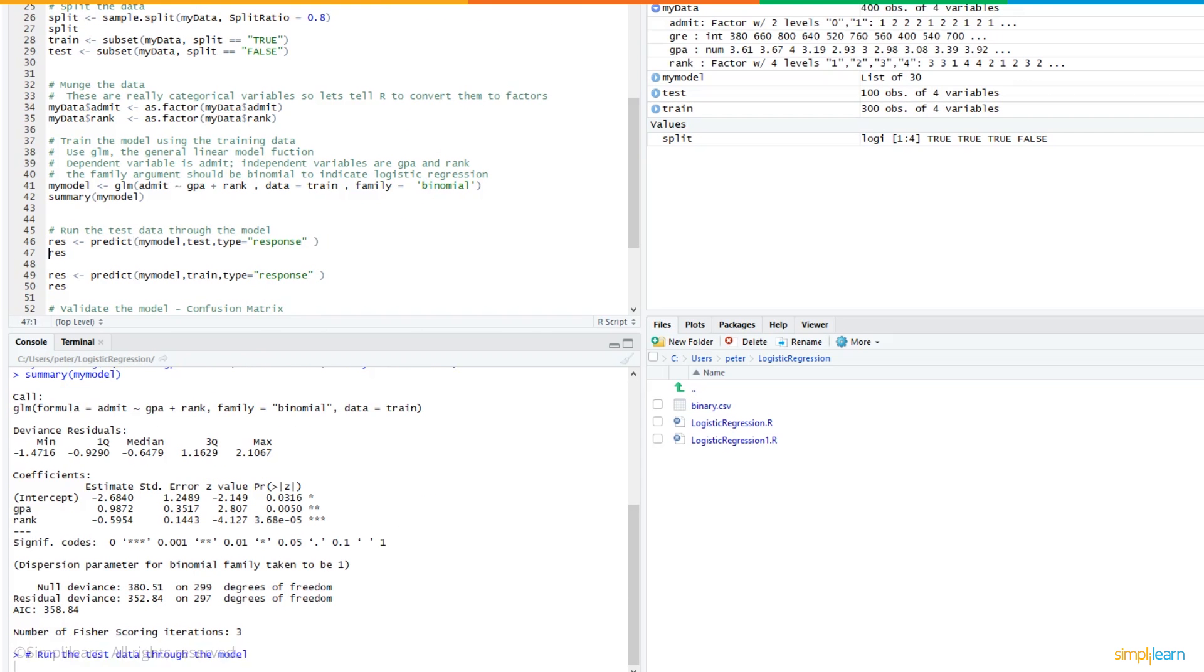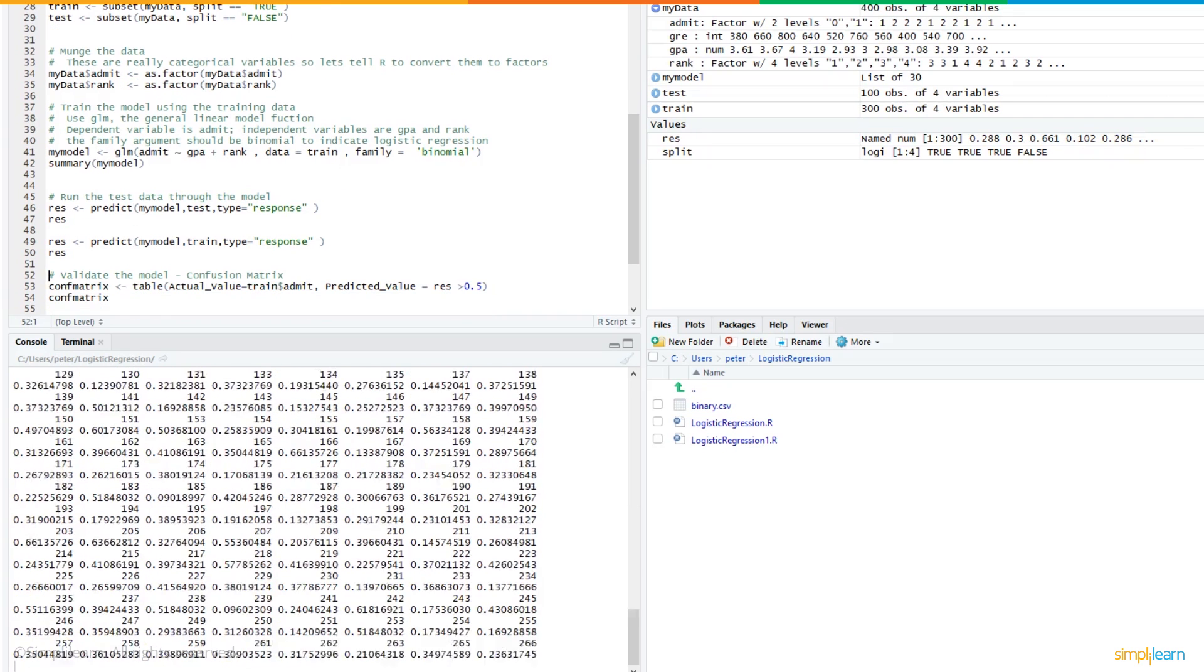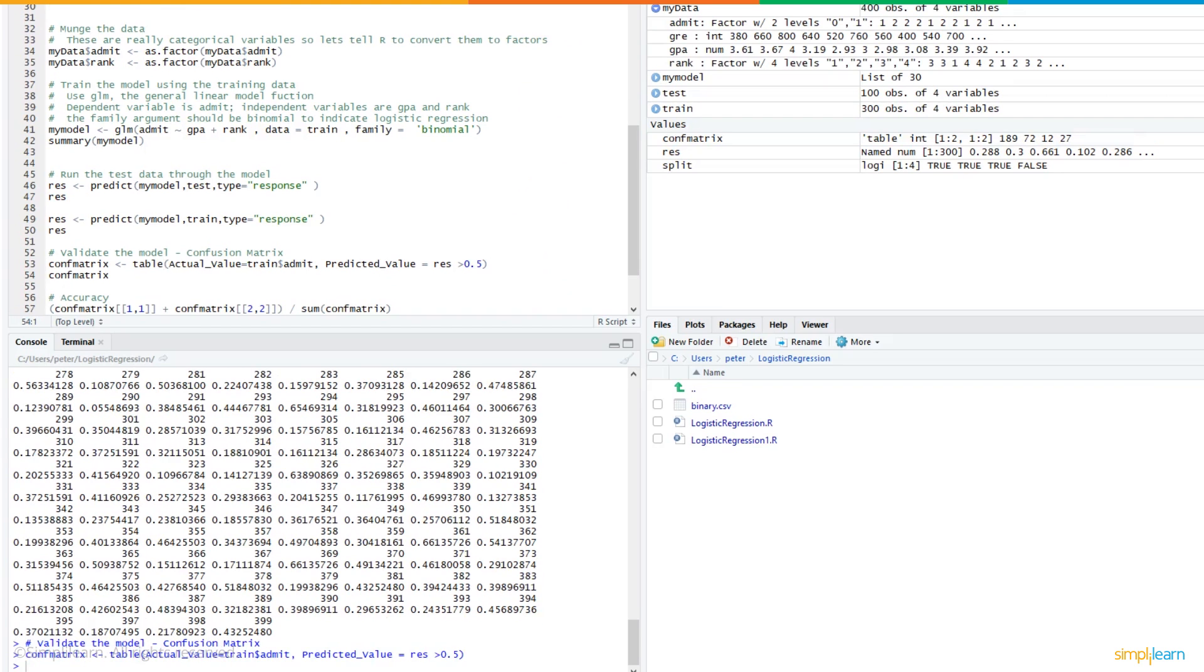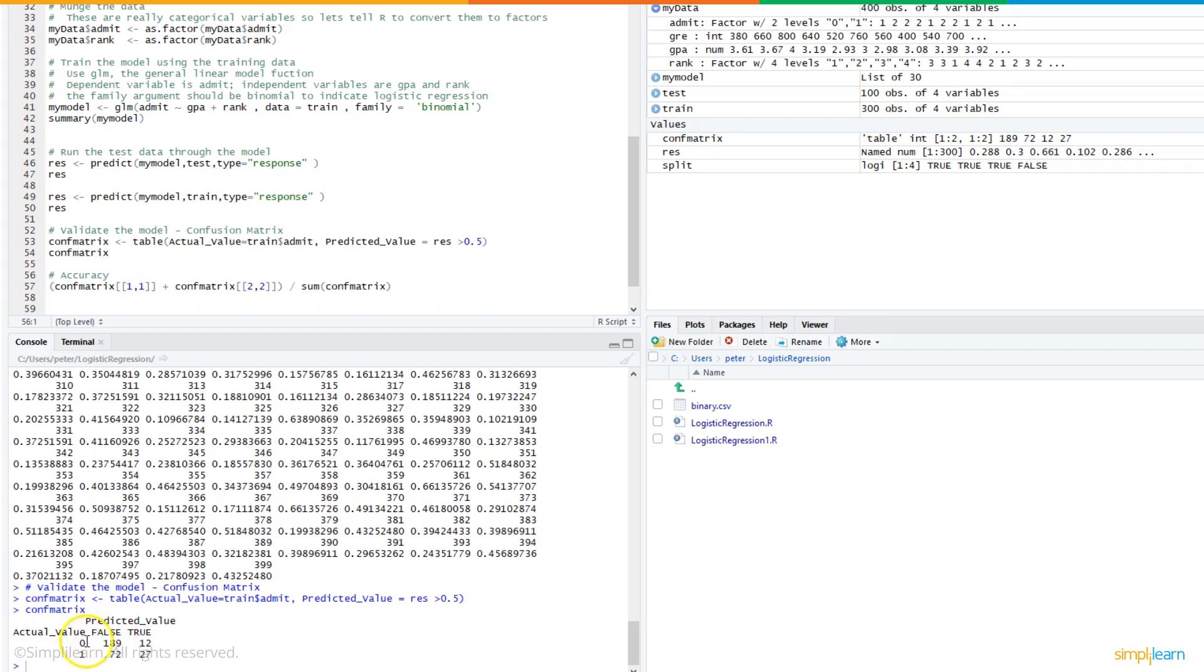So next, let's run the test data through the model. And once we have done all that, we can now set up a confusion matrix and look at our predictions versus the actual values. Again, this is important. We had the answers, and now we took and we predicted some answers. So hopefully our predicted answers match up with the actual answers. We'll run a confusion matrix. As you can see, the predicted values versus the actual values, and it's important here to note that if it was predicted false and it was actually false, and we see 189, or if it was predicted true and it was actually true, which is 27, we did well on those.